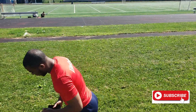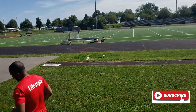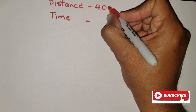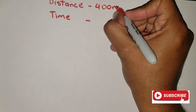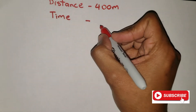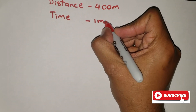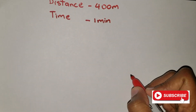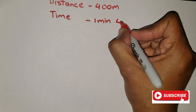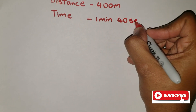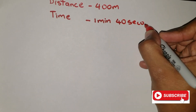Alright, I'm gonna write down the distance I traveled, which was just once around the track — 400 meters. And then we write down the time, which was one minute and 39.7 seconds. We'll just round that up to 40 seconds.